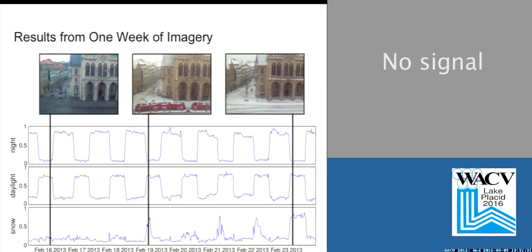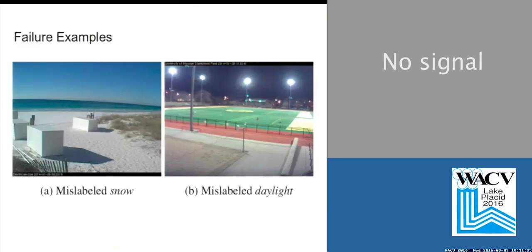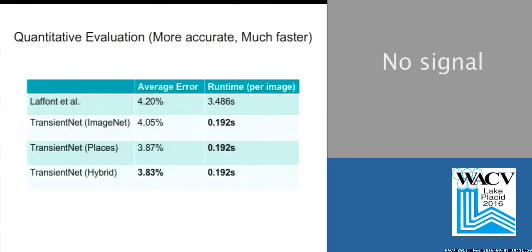It works reasonably well and is fairly robust across lots of different scene types. It doesn't work well in all cases. Here are a couple of failure examples. The image at the left was mislabeled as a snowy image, and the image at the right was mislabeled as daylight. When it does fail, it seems to fail in ways that you can imagine — it's not totally ridiculous. We did some quantitative evaluation: we're more accurate and we're much, much faster.